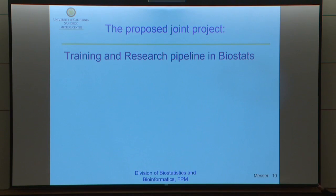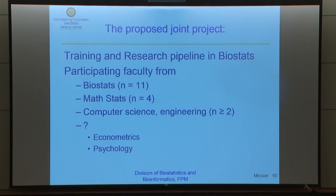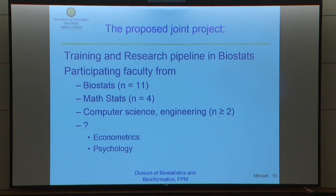The proposed joint project specifically is a training and research pipeline in biostatistics. We've lined up participating faculty: 11 from biostats, four from math — there's a very good math stats group — so far two from computer science and engineering in the data mining and efficient algorithms space, but there are others. There's a good group at econometrics, and psychology can contribute item response theory. So there are various data science players across campus that we're reaching out to.